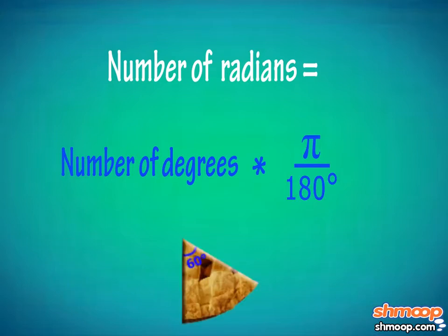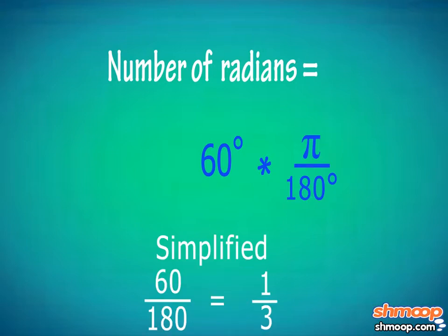Remember, Tommy's slice is 60 degrees. So 60 times π over 180, simplified, is the same thing as π over 3.